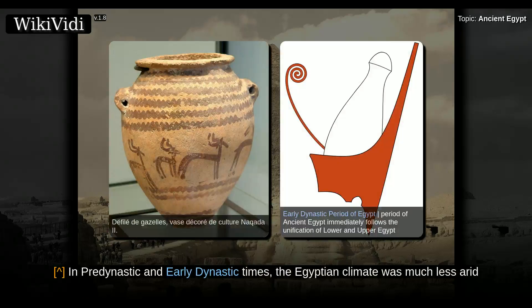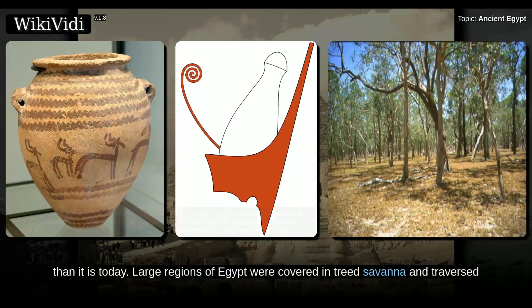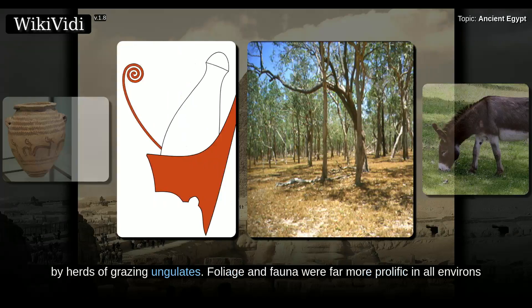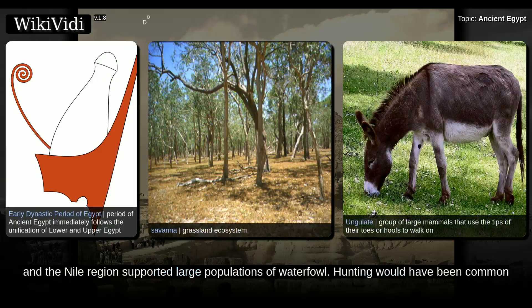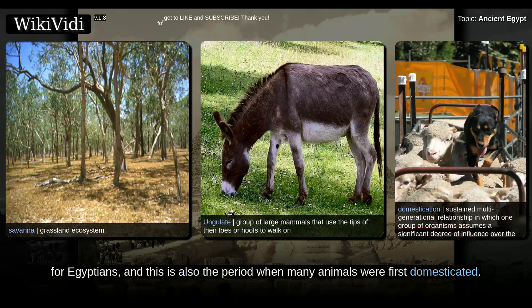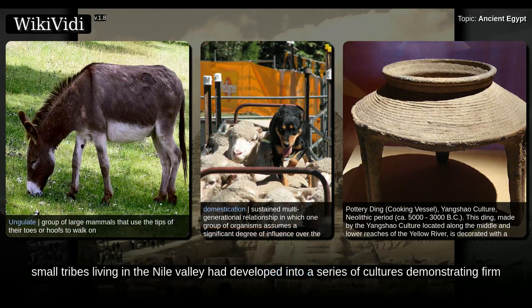In predynastic and early dynastic times, the Egyptian climate was much less arid than it is today. Large regions of Egypt were covered in treed savannah and traversed by herds of grazing ungulates. Foliage and fauna were far more prolific in all environs, and the Nile region supported large populations of waterfowl. Hunting would have been common for Egyptians, and this is also the period when many animals were first domesticated.